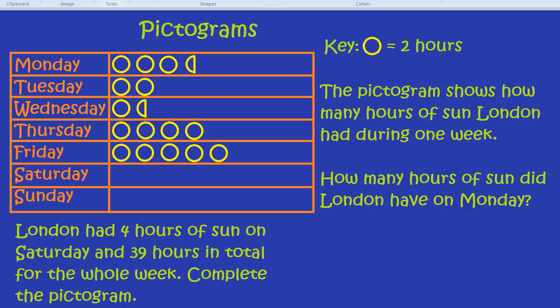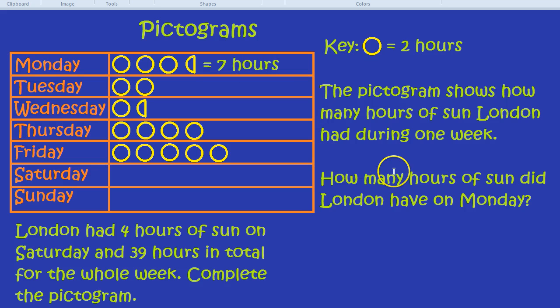So we can even write that. This equals seven hours of sunshine. So that answers the first question.